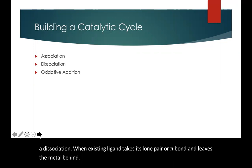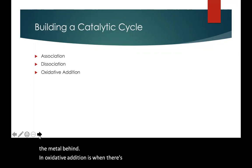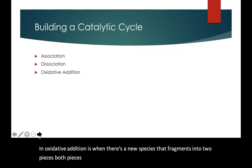An oxidative addition is when there's a new species that fragments into two pieces, both pieces end up attached to the transition metal and it can happen a couple of different ways.